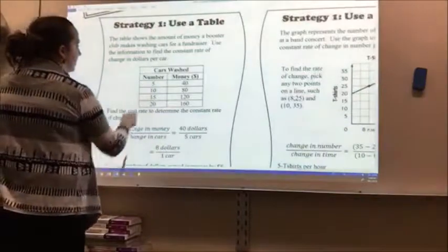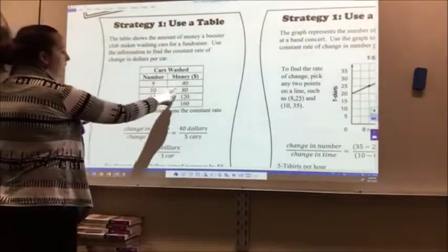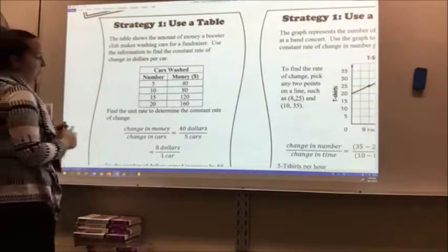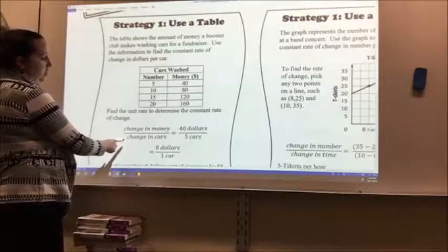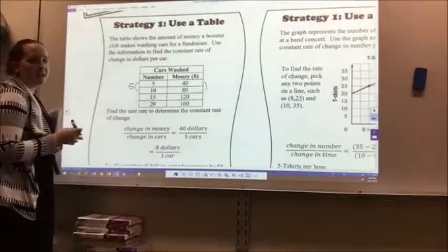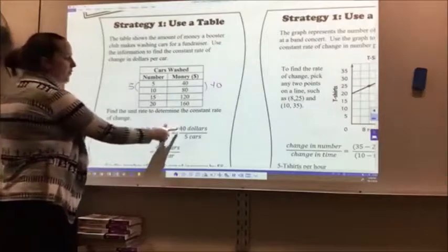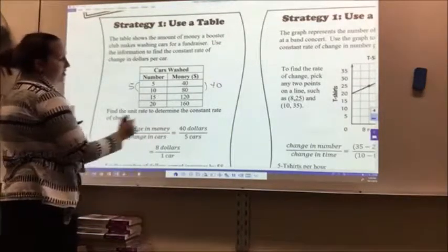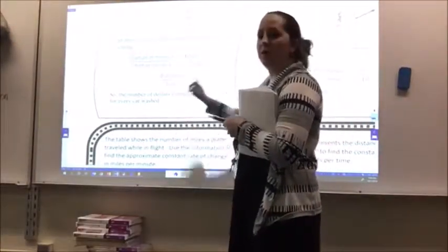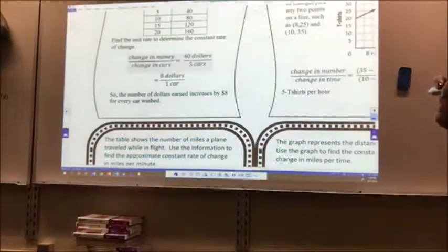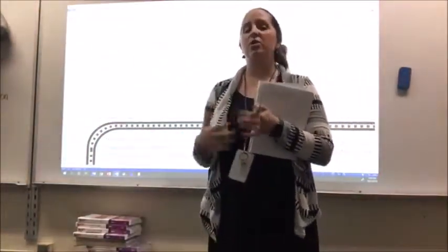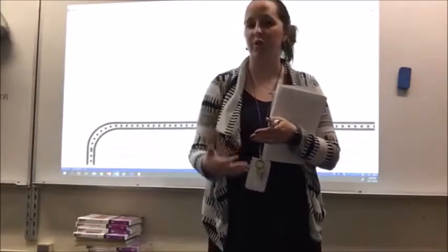Looking at this, I have five cars washed — they made $40. Ten cars washed made $80. I need to find the unit rate to determine the constant rate of change. What we do is take the change in money divided by the change in cars. Ten minus five gives me five, and eighty minus forty gives me forty. So that's my change: forty dollars over five cars, which gives me eight dollars. The change is forty each time and five each time. So eight dollars for one car — the number of dollars earned increases by eight dollars for every car washed. It's a proportional relationship because it has a constant rate of change, so those terms can be interchangeable.